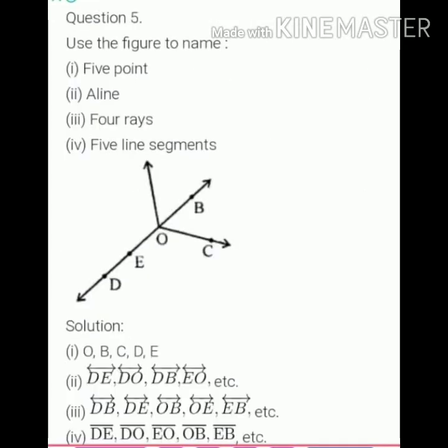Question number five is, look at the figure and name them. So first part is five points. So five points are O, B, C, D, E.